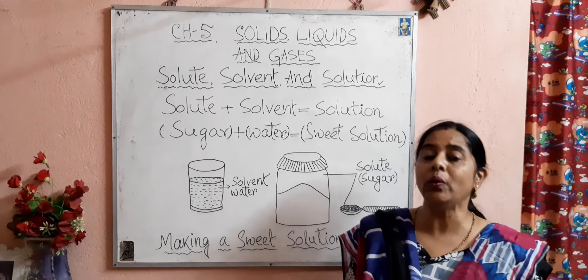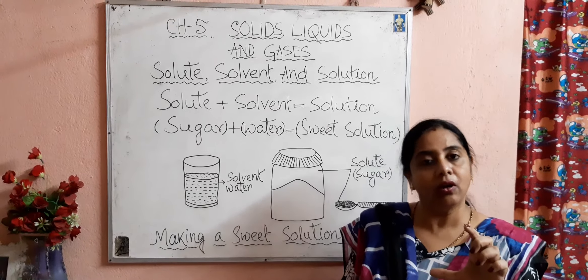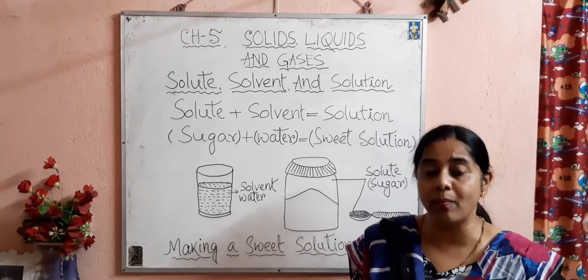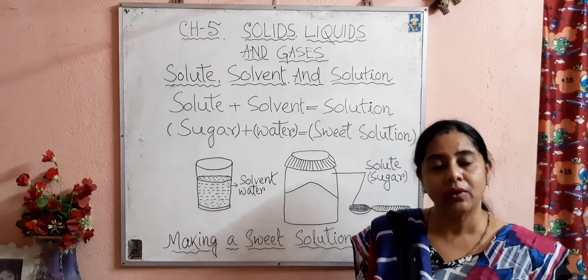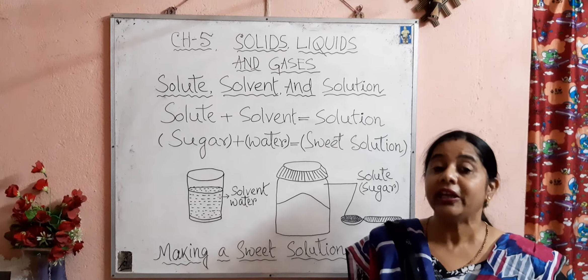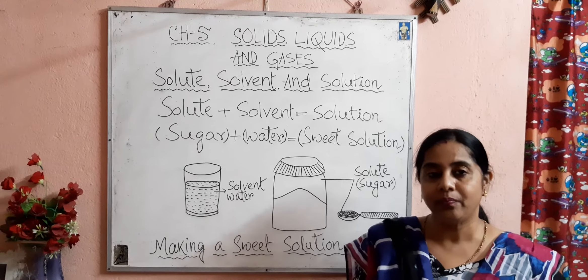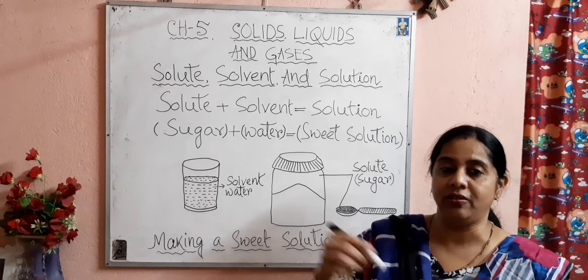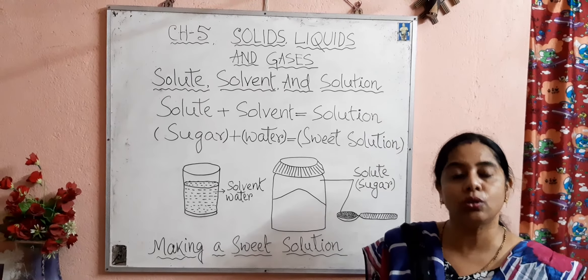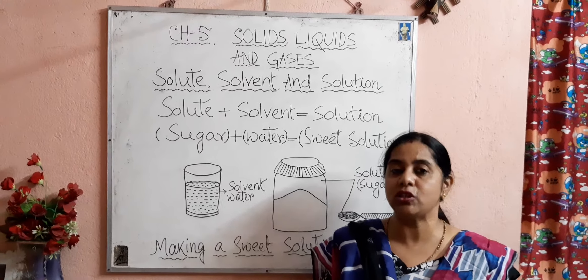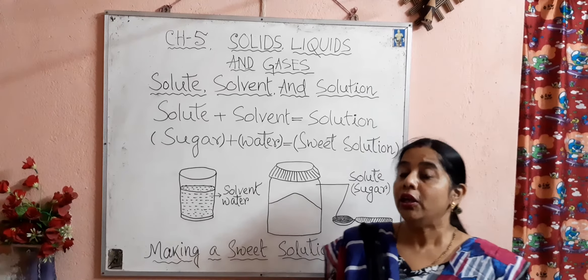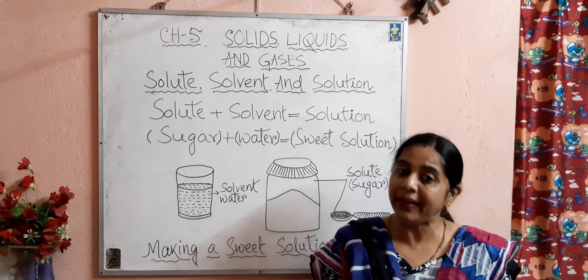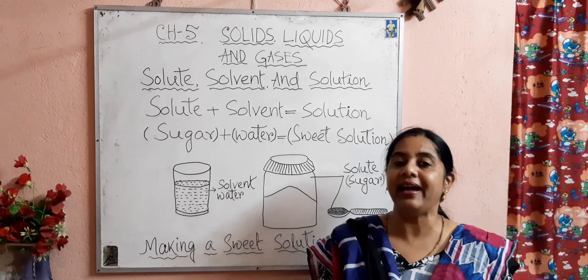But if you take some normal water and try to dissolve two tablespoons of sugar in it, it will dissolve faster than in cold water. And if you heat that water, the solute — that is the sugar — dissolves even faster in that hot water. So if you increase the temperature of a solvent, more amount of solute can dissolve and it takes less time — the solute dissolves quickly in hot solvent.